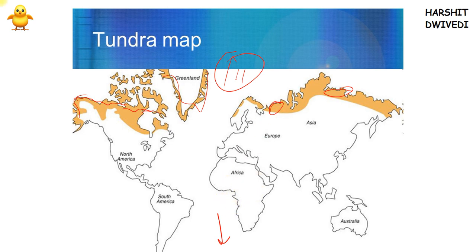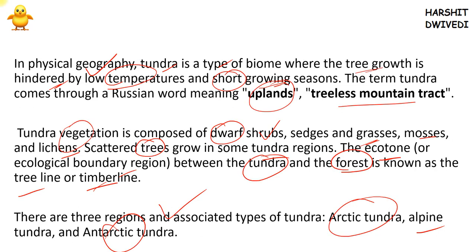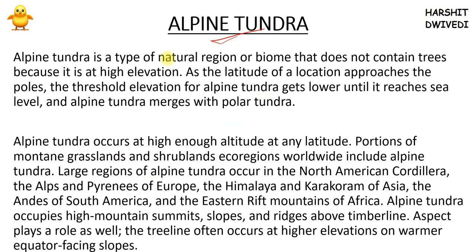Similarly, Antarctic tundra is clear. The third type is alpine tundra. Alpine tundra is a natural biome region also lacking trees, where extremely low temperatures exist because of very high elevation. As we go towards the poles, the threshold elevation for alpine tundra gets lower, and when it reaches sea level, the alpine tundra merges with the polar tundra.